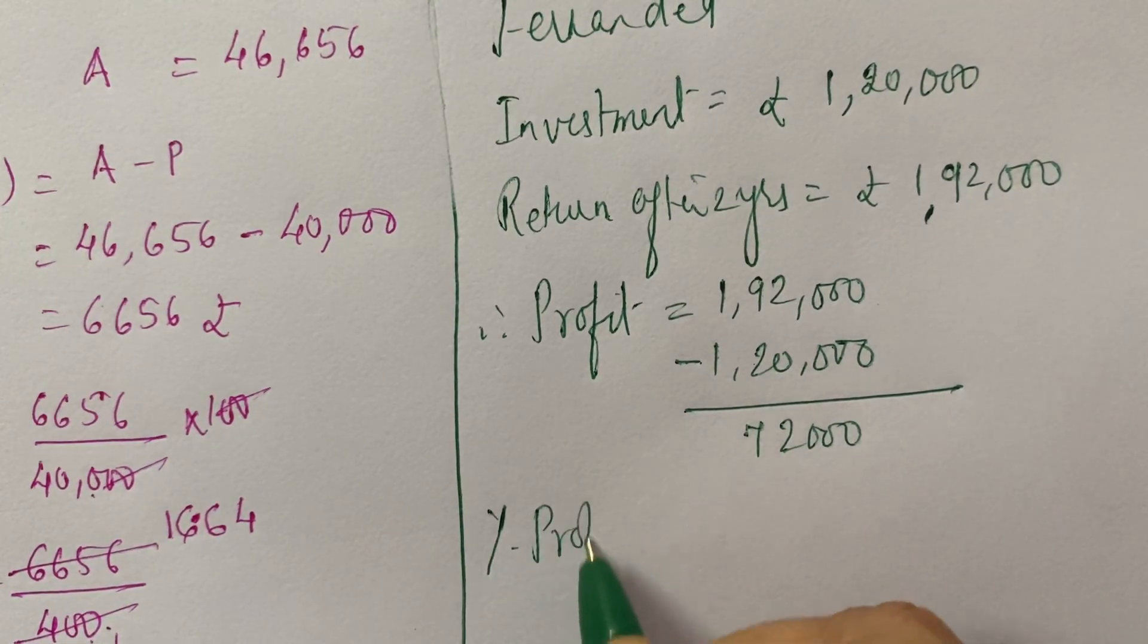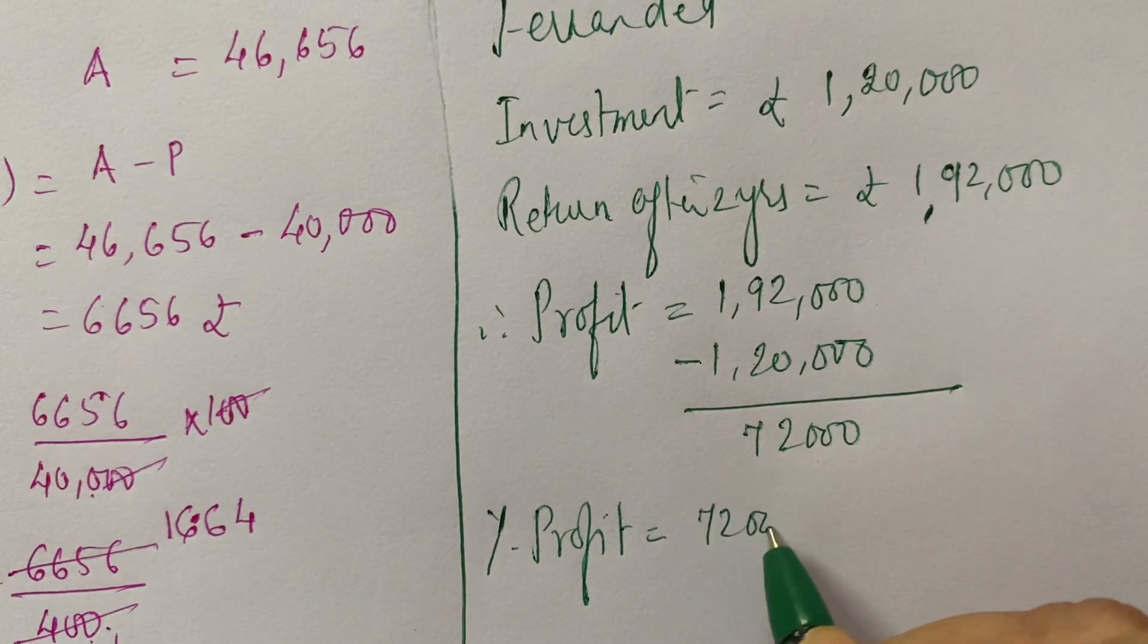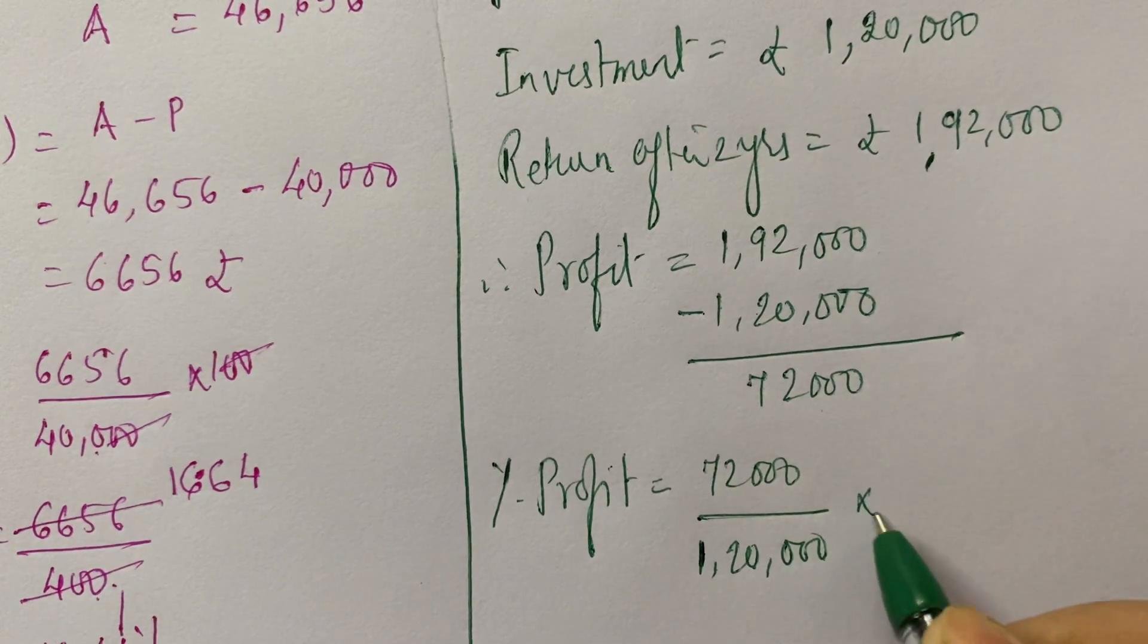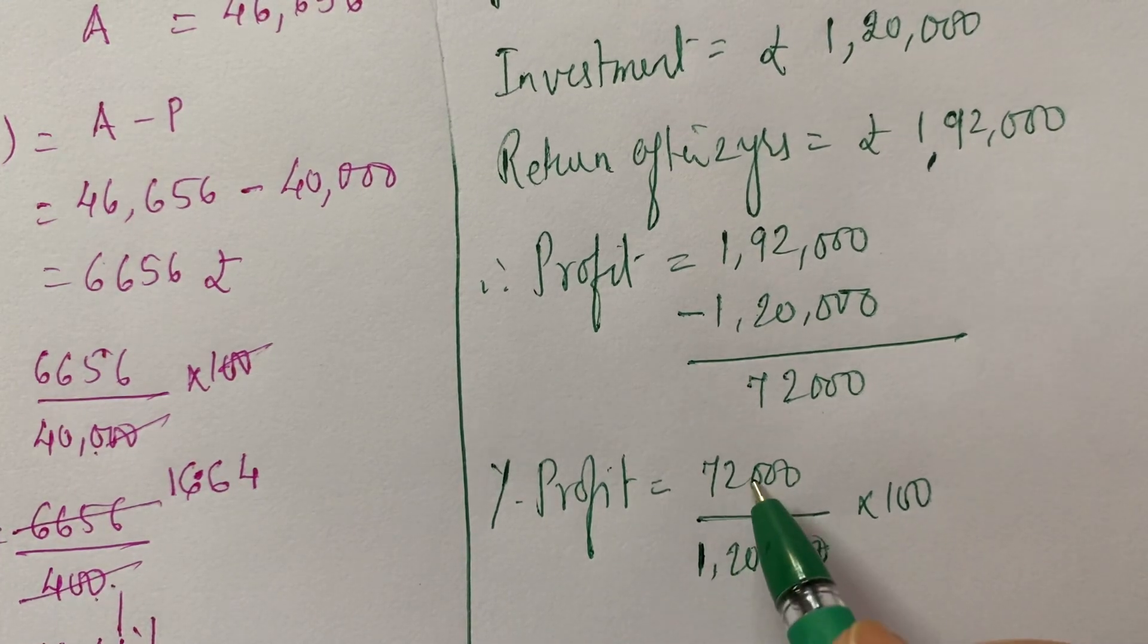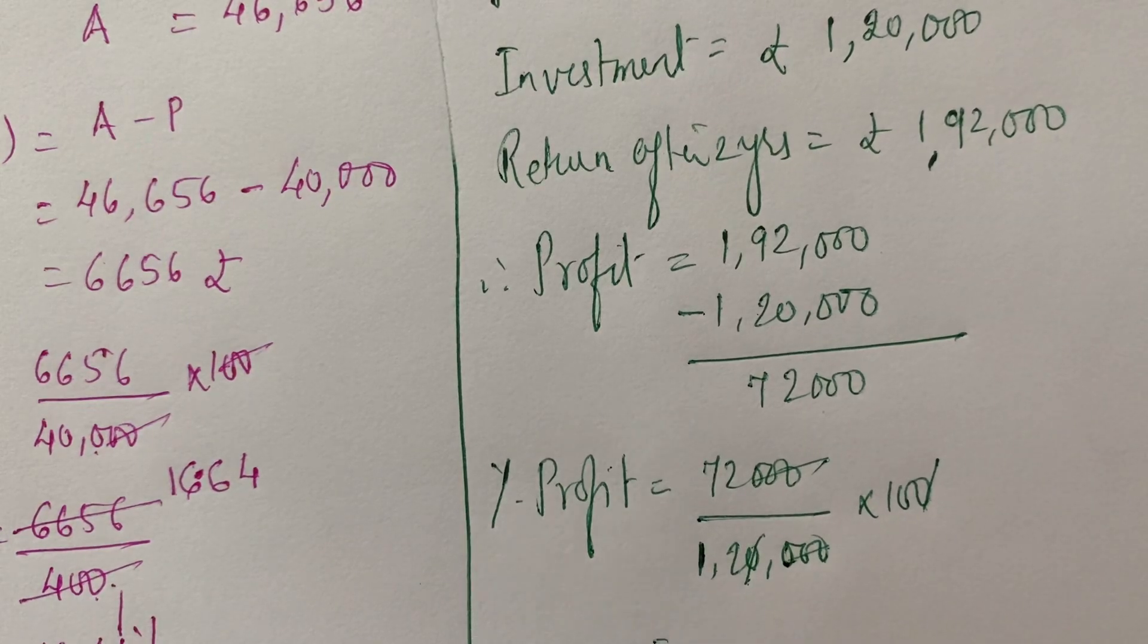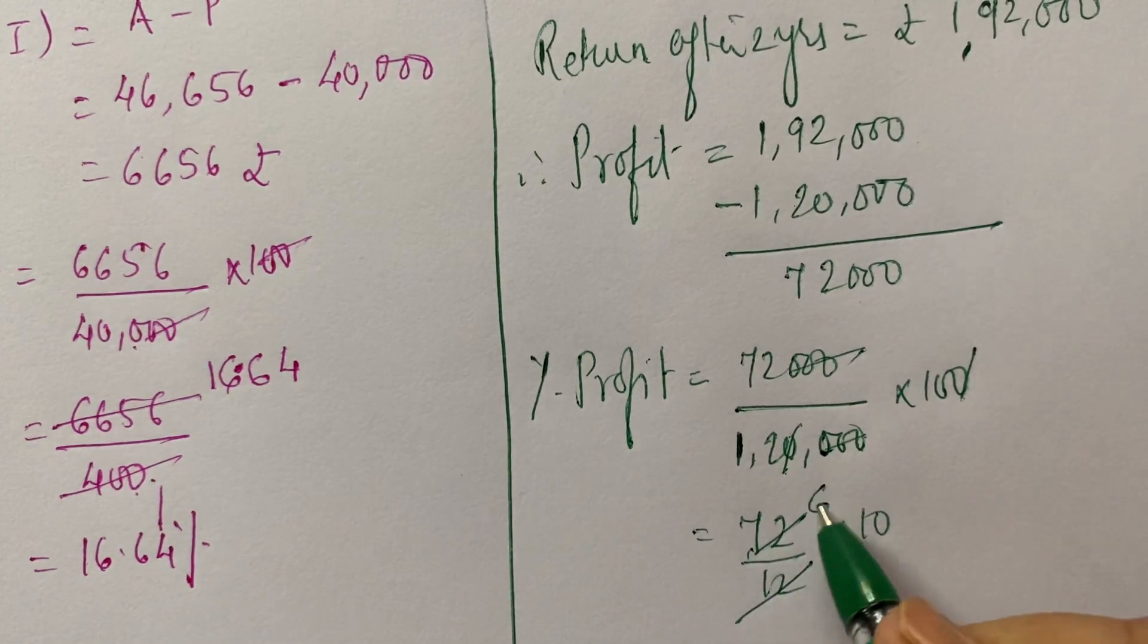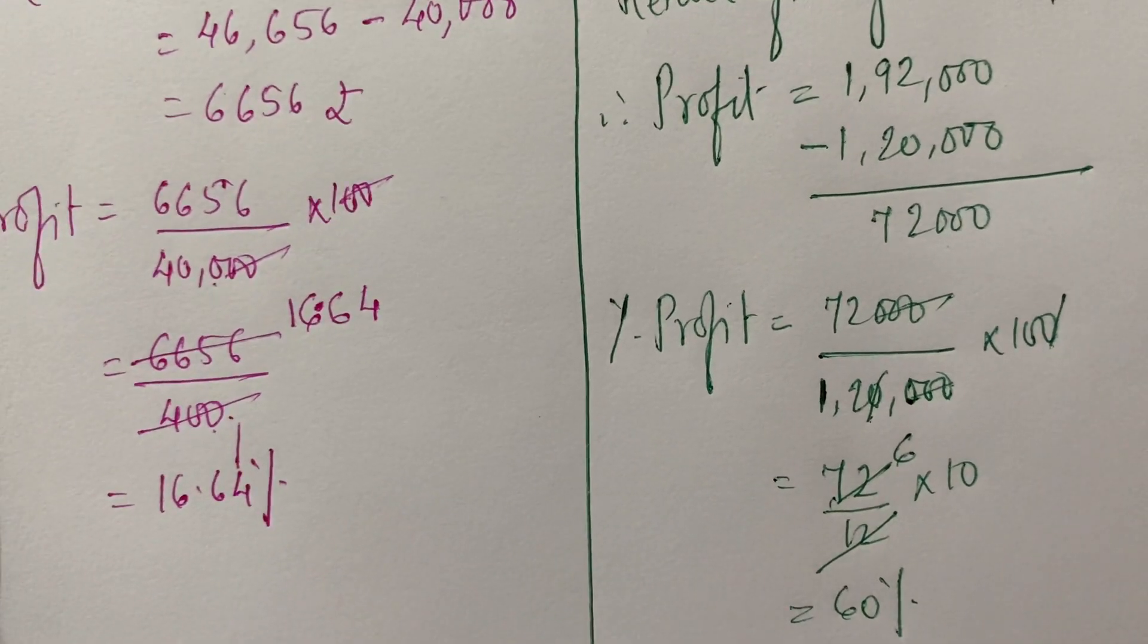Now, let us find out the percentage of profit earned by Mr. Fernandez. It will be the profit upon the investment. Investment is Rs. 1,20,000. And you multiply it by 100. So, these 3 zeros are gone. One of the zeros is gone with this. You are left out with 72 upon 12 into 10. So, 12, 6 is 72. 6, 10 is 60% is his profit.